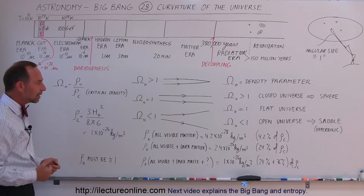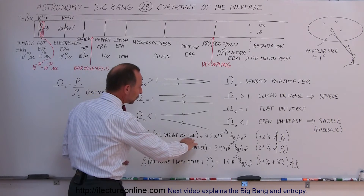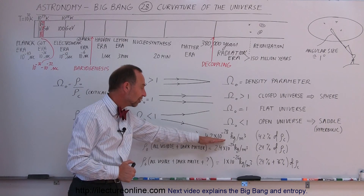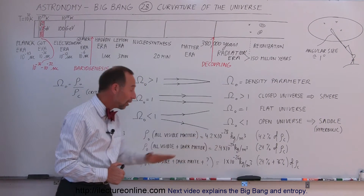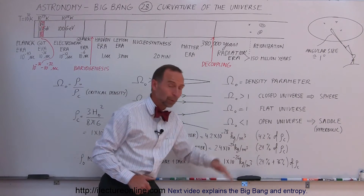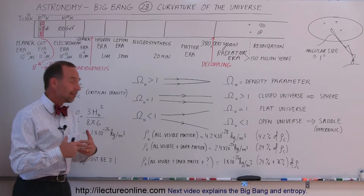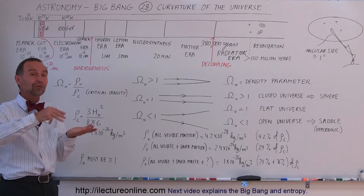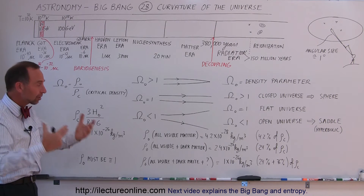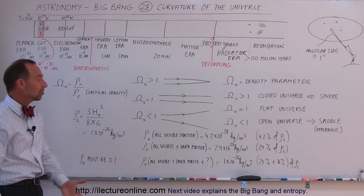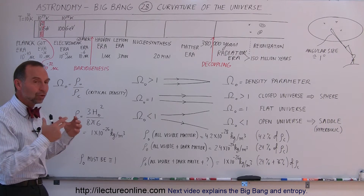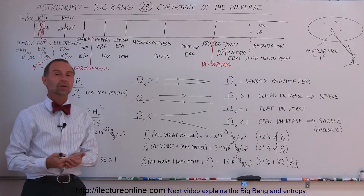We've done some calculations. If we take into account all the visible matter of the universe and we know how big the universe is, we find that the density of the universe is far less than the critical density — only about 4.2% of the critical density. All the atoms, all the hydrogen and helium, all the stars, planets, comets, and galaxies put together do not add up to enough mass to give the universe a critical density.